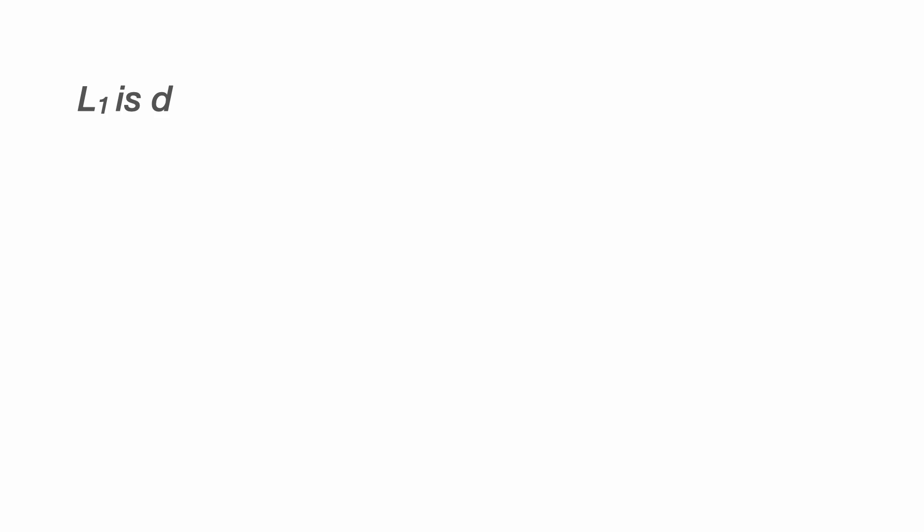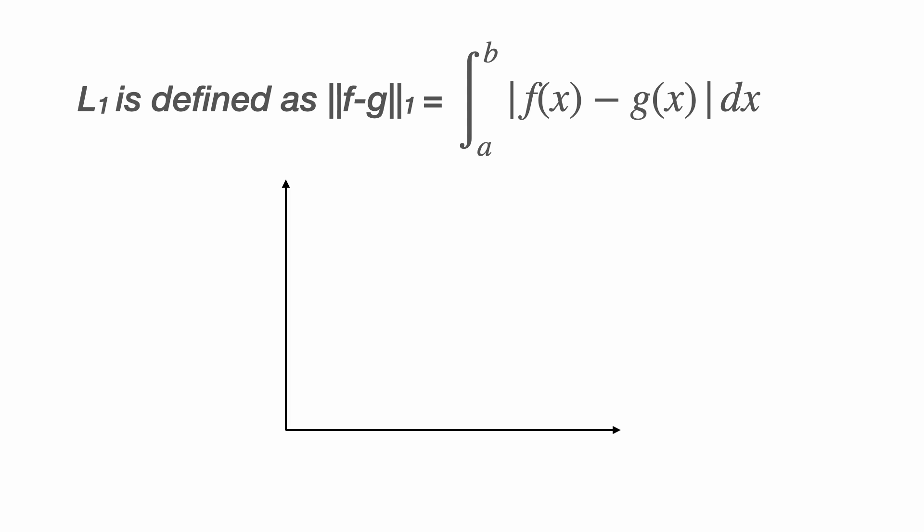To get some intuition as to what's going on, we'll first look at the L1 norm of f minus g. This is the integral of the absolute value of f of x minus g of x between a and b. Showing f of x and g of x on this graph, the L1 norm is the area enclosed between the two curves, and I've shown this in grey.